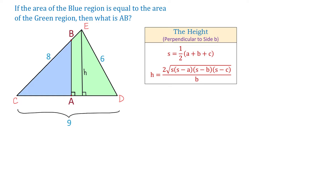then the height is equal to 2 times the square root of S times (S minus A) times (S minus B) times (S minus C), all over B, where S is one half times (A plus B plus C). So to find the height, first we will find S, which is one half times (6 plus 8 plus 9).